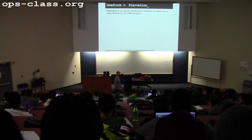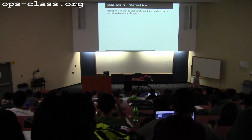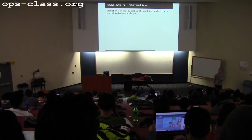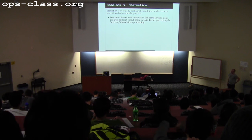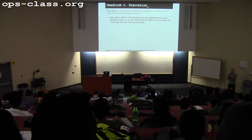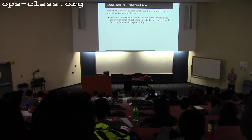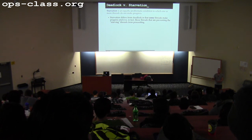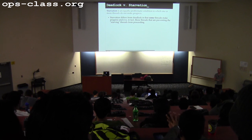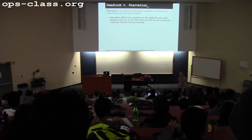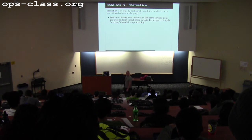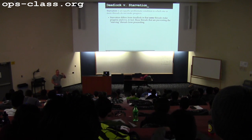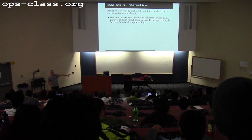Deadlock is different from starvation. In deadlock, everybody is sleeping and nobody makes progress. In starvation, some threads make progress but another category of threads does not. Starvation is important because it allows one category of threads to indefinitely prevent another from making progress. You'll need to think about this when implementing reader-writer locks — it's very easy for naive implementations to starve writers, meaning if there are enough readers, writers will never make progress.